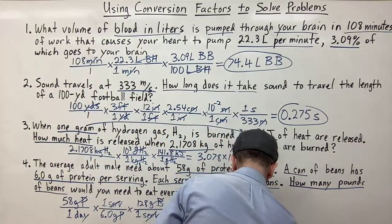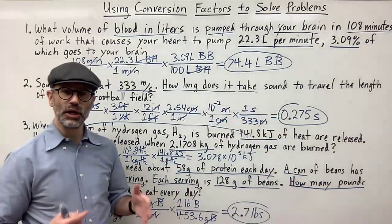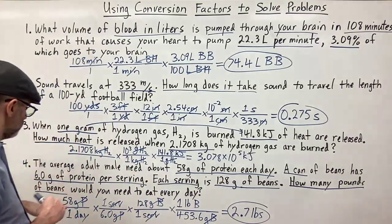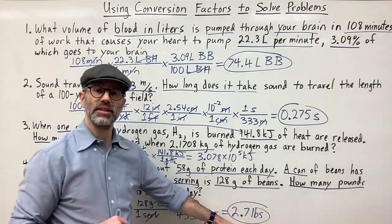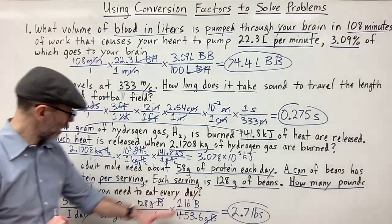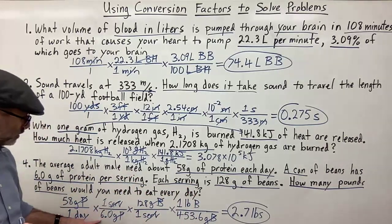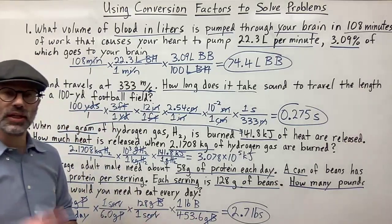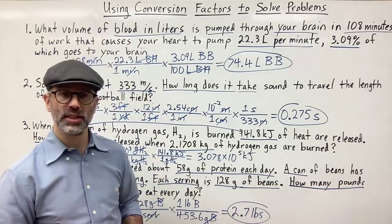That's 2.7 pounds of beans — vegetarian beans, but beans nonetheless. For sig figs: we have 2 sig figs here, 2 sig figs here, 3 sig figs here, and 4 sig figs here. The least number is 2, so our answer should be in 2 sig figs: 2.7 pounds.